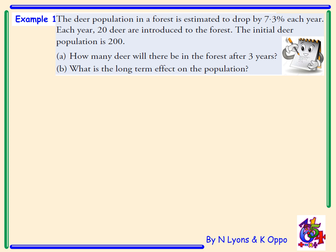Example 1: The deer population in a forest is estimated to drop by 7.3% each year. Each year 20 deer are introduced to the forest. The initial deer population is 200. Part a: how many deer will there be after 3 years? We obtain the recurrence relation u_(n+1) = 0.927·u_n + 20, since 100% − 7.3% = 92.7% = 0.927. Our starting population is u_0 = 200.